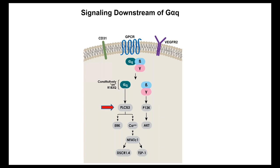Now I'll describe downstream signaling from G-alpha-Q. It's coupled to a G protein-coupled receptor and in its inactive state is bound to beta-gamma as GDP-bound. The R183Q mutation causes constitutive activation of G-alpha-Q, separating it from its beta-gamma dimer pair. G-alpha-Q activates phospholipase C beta-3, leading to diacylglycerol, IP3, ERK signaling, and calcium signaling downstream. The beta-gamma subunits can activate PI3 kinase. Our first question was whether phospholipase C beta-3 is active given the constitutive activation of G-alpha-Q.